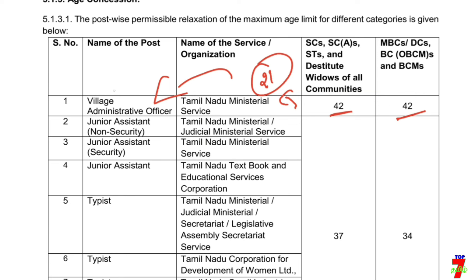If you say this, you will study the 10th grade. If you study the 10th grade and apply for the VIO exam — Group 4, VIO department — if you apply for the VIO exam, you have 42. If you study the 10th grade, 12th grade, diploma, or degree, you have no age limit.